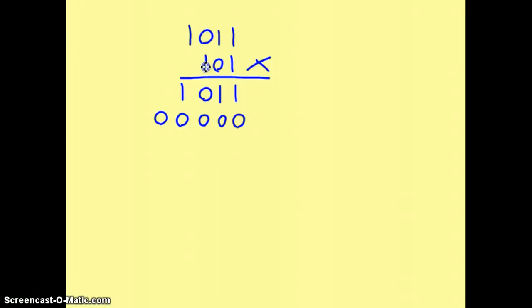We've shifted along two columns now, so we need two 0's. 1 times 1 is 1, 1 times 1 is 1, 1 times 0 is 0, and 1 times 1 is 1.